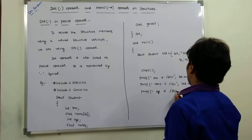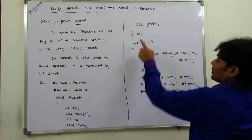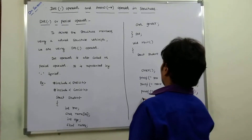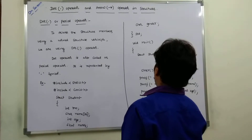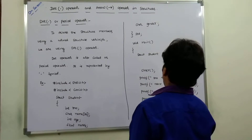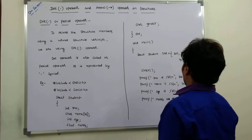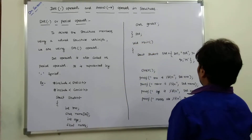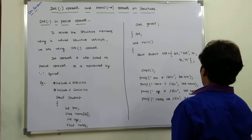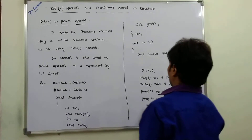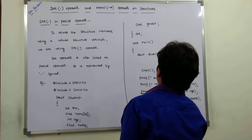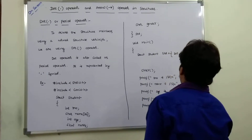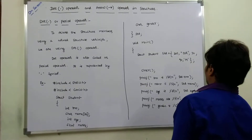To access age using printf with %d and newline, we use structure variable dot age: std.age. To print marks using printf with %f and newline, we access it as std.marks. For gender, using printf with %c and newline, we access it as std.gender.